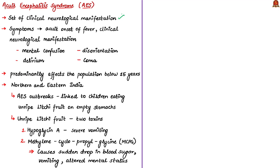Here, delirium means a serious disturbance in mental abilities resulting in confused thinking and reduced awareness of the environment. Acute encephalitis syndrome also includes Japanese encephalitis. This syndrome predominantly affects the population aged below 15 years. The outbreaks of acute encephalitis syndrome, particularly in north and eastern India, have been linked to children eating unripe lychee fruit on empty stomachs, because unripe lychee contains two toxins: hypoglycine A and methylene cyclopropylglycine (MCPG).